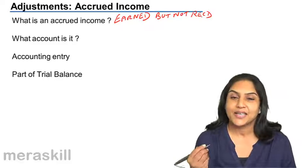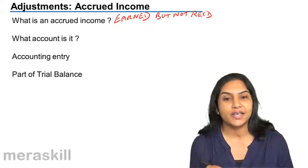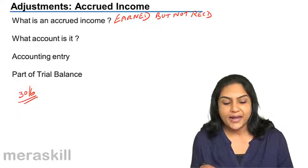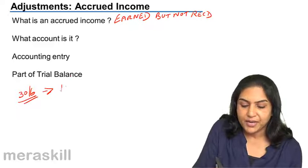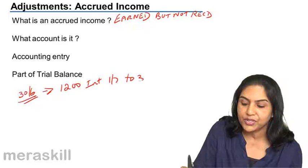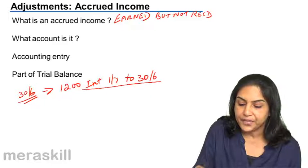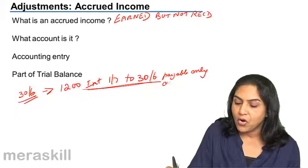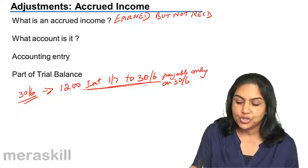Let us take an example with interest income. It is possible that the bank pays us interest only on a specific date — maybe only on 30th June. Interest for the year ended up to 30th June amounts to 1,200, which is our interest income from 1st July to 30th June. What is the total interest income? 1,200 for the period July to June.